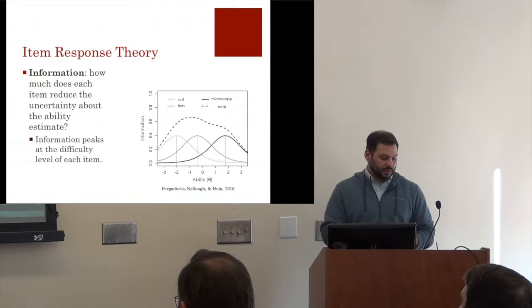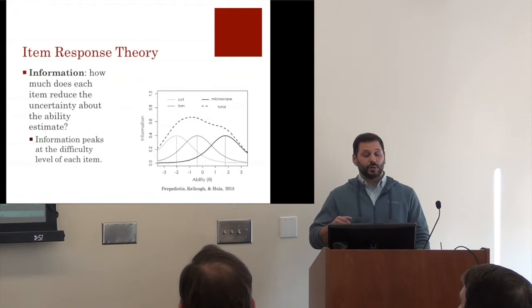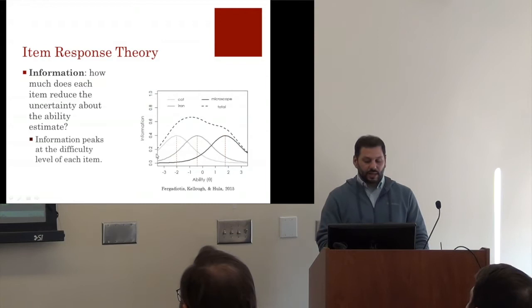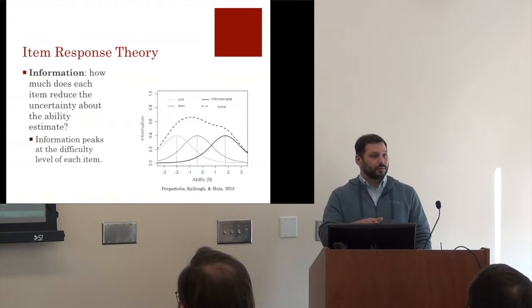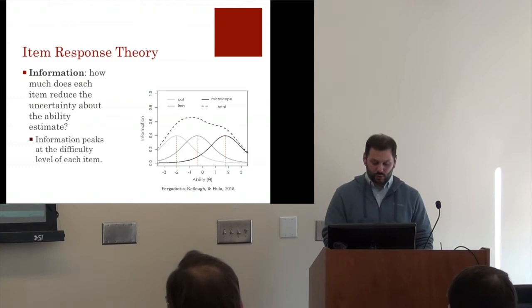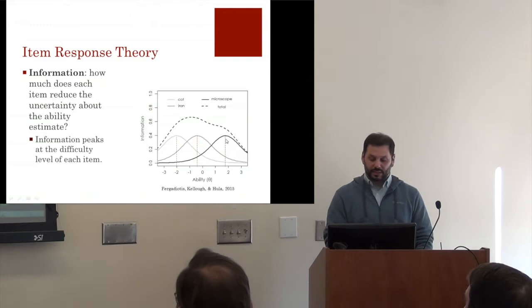Another central IRT concept is information, which quantifies how much our uncertainty about a person's ability estimate would be reduced by administering a specific item. Different items, depending on their difficulty, are informative for different regions of the ability spectrum. For example, 'CAT' is informative for individuals on the severe end of the distribution but not for those on the mild end, while 'microscope' is informative for individuals on the mild end but less so for the severely impaired.